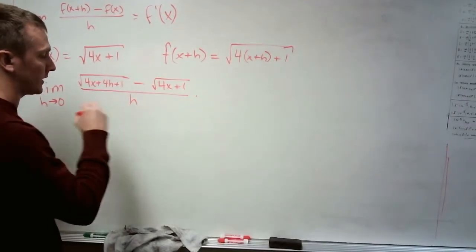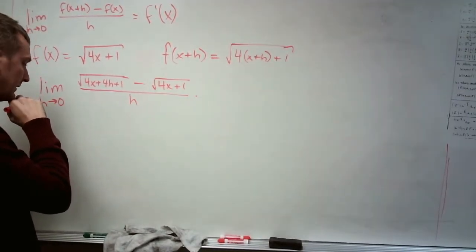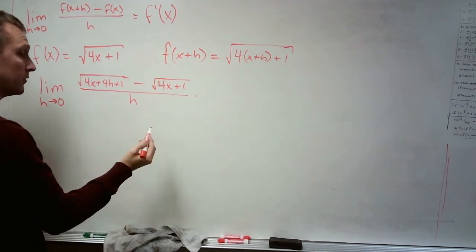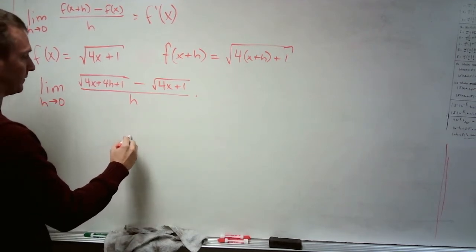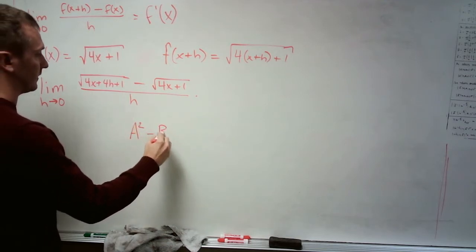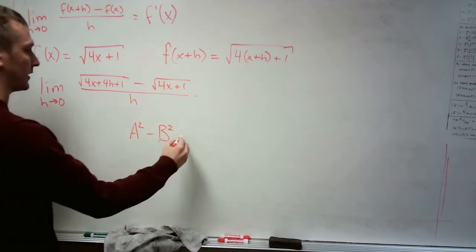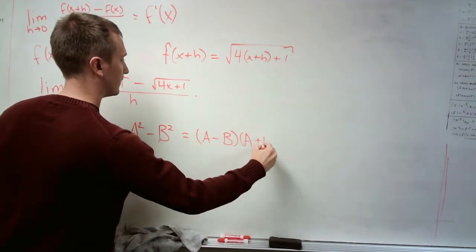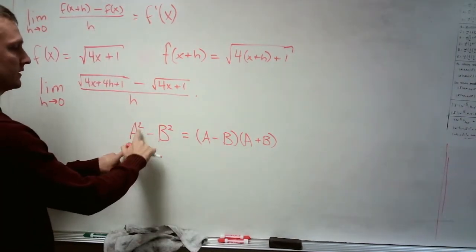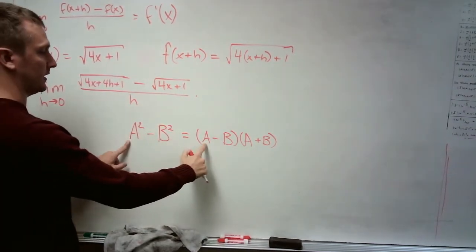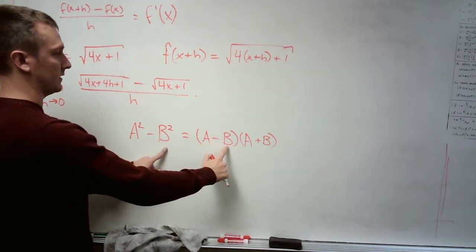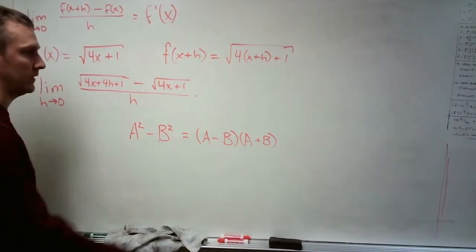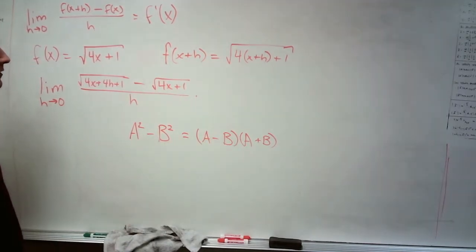I mentioned something in class today about multiplication by conjugates. So I can give a brief review here about something related. So when we have a difference of squares, something squared minus something squared, we can always write that as this factorization: A² - B² = (A - B)(A + B). If you foil this out, you can confirm that you do get this.